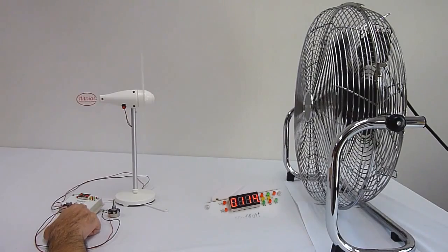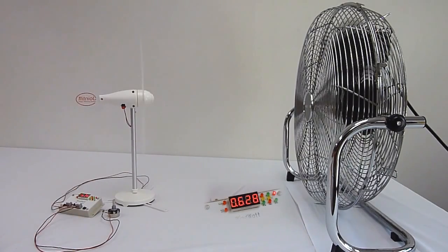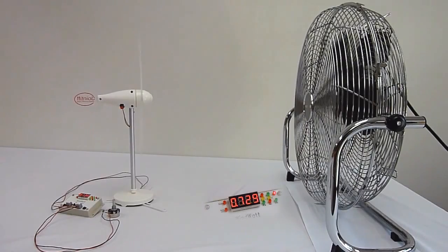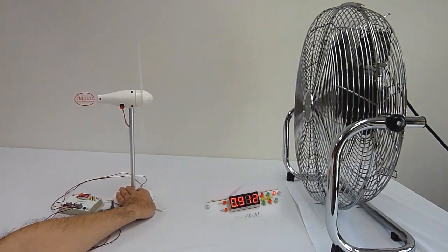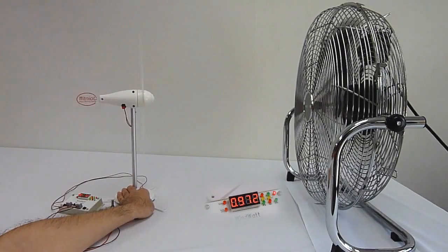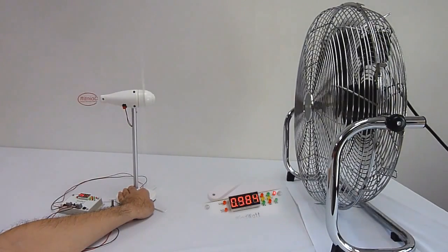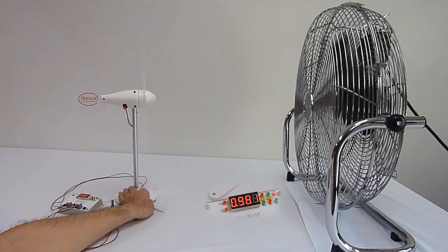Now let us turn the fan speed to the middle speed setting. The turbine starts to move by the wind. We hold the turbine with our hand. Note that the power is 0.996W at the middle speed setting.